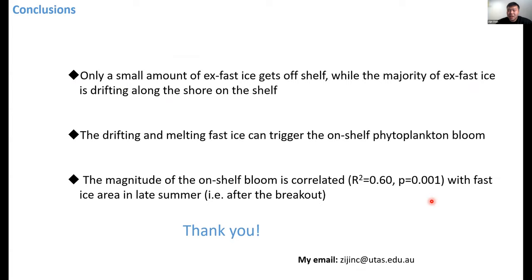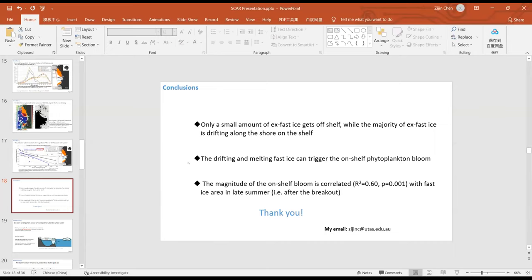During the Q&A, a questioner asked whether the broken fast ice actually seeds the water column — depositing algal material — or whether it deposits nutrients and iron that cause a phytoplankton bloom. Jing Chen responded that this research was based on physical datasets: the fast ice distribution dataset by Fraser (a 15-day dataset) and ice motion data. The trajectories were calculated over 50-day intervals and assembled to give density maps.